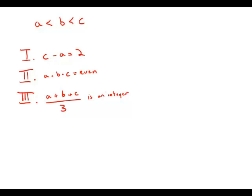If A, B, and C are consecutive positive integers, and A is less than B, which is less than C, which of the following must be true?